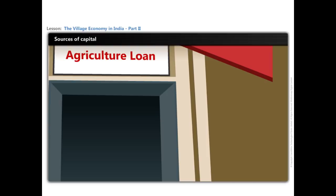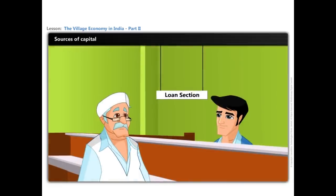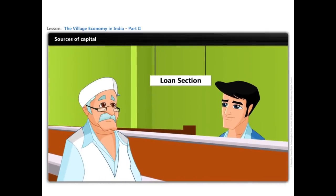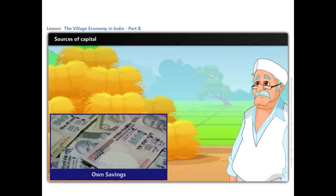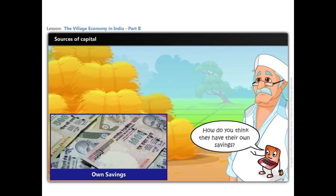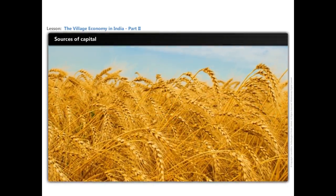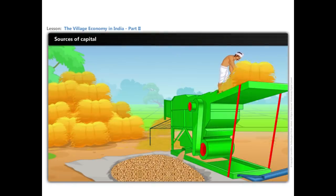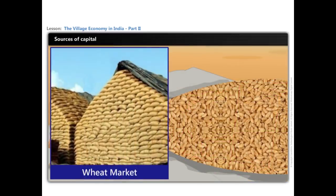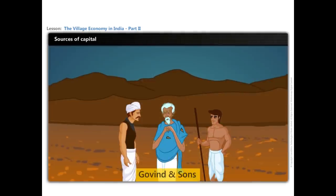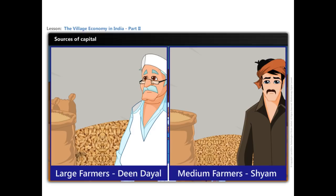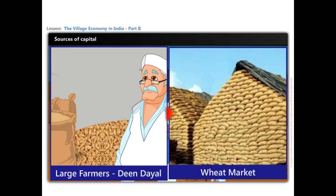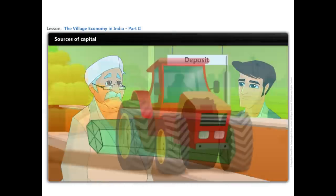In contrast to the small farmers, the medium and large farmers have many options. They even get bank loans to purchase capital-intensive agricultural implements such as tractors and combined harvesters, as they are able to provide the necessary documents required for loans. Moreover, the medium and large farmers have their own savings from farming. A farmer with a large piece of land produces wheat, retains a part for the family's consumption, and sells the surplus wheat in the market. Small farmers like Govind and his sons have little or no surplus, but farmers like Deendayal and Shyam have enough surpluses. Thus, it is the medium and large farmers who supply wheat to the market. A part of the earnings is saved and kept for buying capital for the next season.